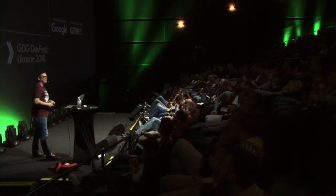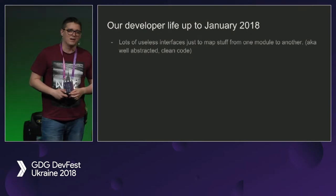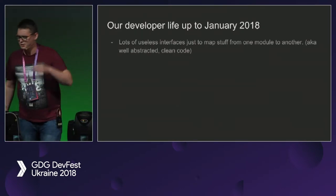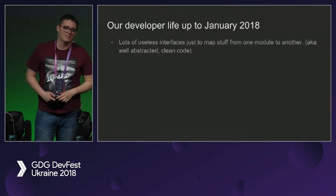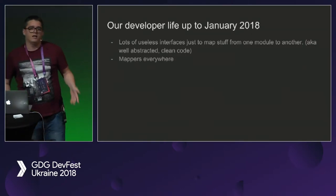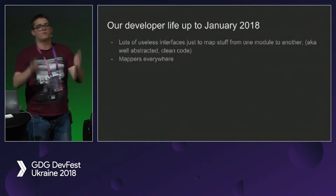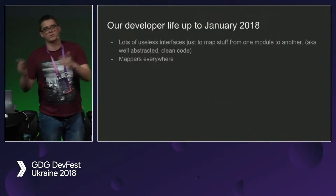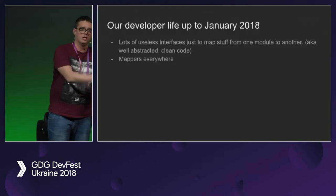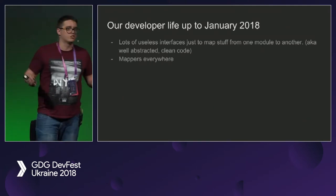We realized there were some problems with it. We had lots of useless interfaces just to map stuff from one module to another — abstract clean code. Maybe when we were reading materials about Android clean architecture, we misinterpreted it and only realized after three years. Mappers were everywhere because you were downloading something — the code for parsing a JSON file to a POJO was in the data module, then you had to convert it into the core module, and then when you needed Android resources you'd need to add another abstraction layer. Even the simplest changes required recompiling all those modules, so incremental builds took a minute and a half.